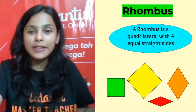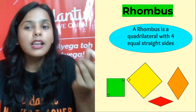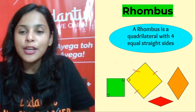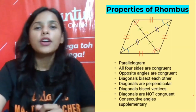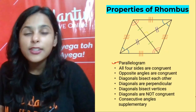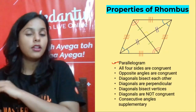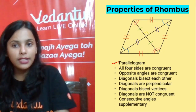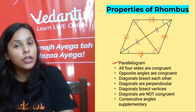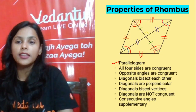Boom property number one of rhombus. First let's understand what a rhombus is. A rhombus is a quadrilateral with all sides equal to each other. Properties: first, it is a parallelogram, so all properties of a parallelogram apply to rhombus as well. All four sides are congruent, and opposite angles are equal to each other.